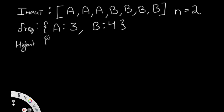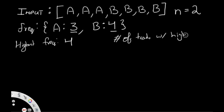So the highest frequency is four. We also need to look at one more thing: how many tasks have the same frequency as the highest frequency. In this case, only B has a frequency of four, so the number of tasks with highest frequency is one. That's all we need to care about.